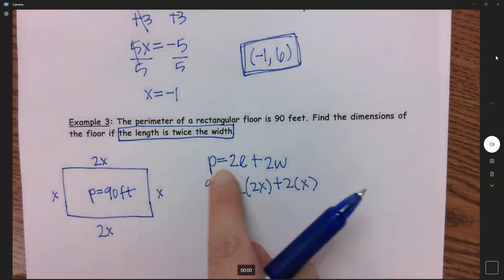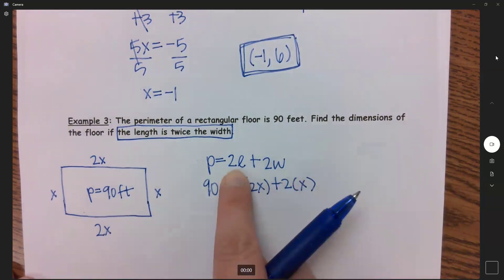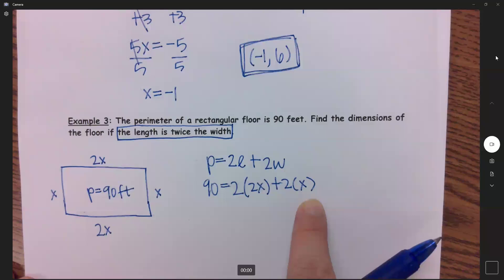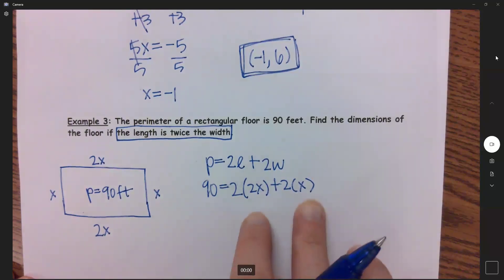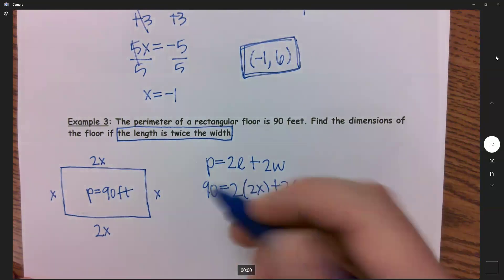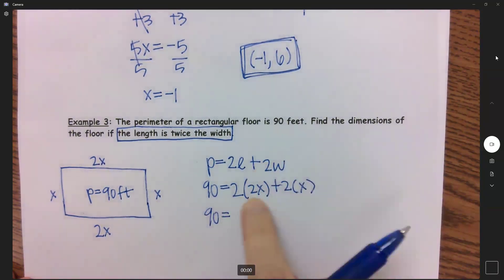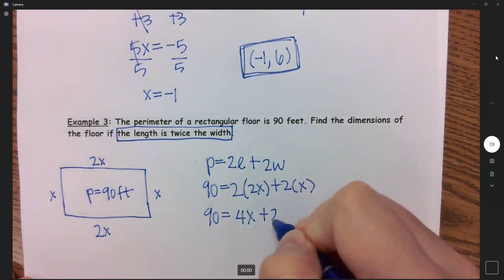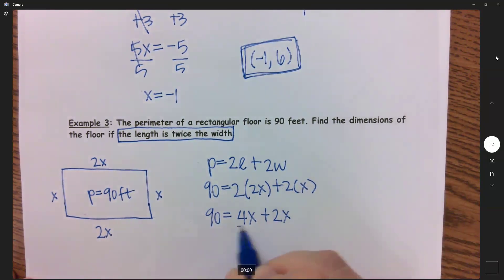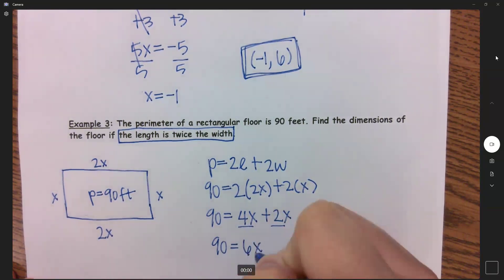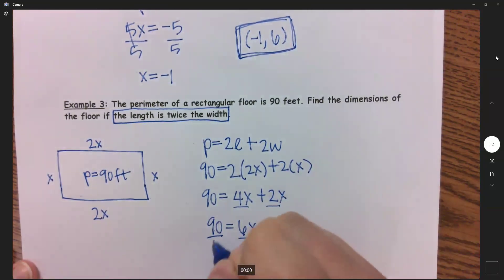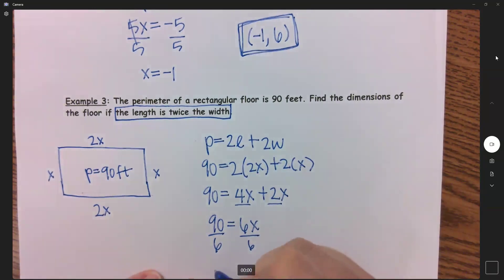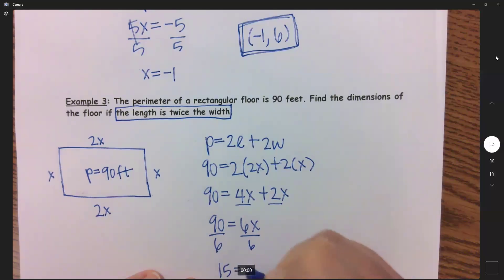So before I had two variables that I didn't know. I had an L and I had a W. But now that I've substituted these in, I now only have one unknown, just that x. So 2 times 2x is 4x. 2 times x is 2x. These are like terms. So we'll add and get 90 equals 6x. Divide by 6. And we get 15 equals x.